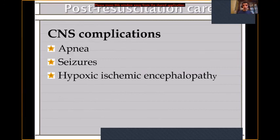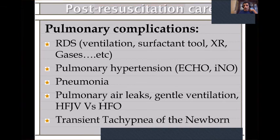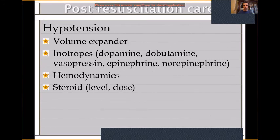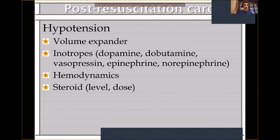You need to address CNS complications — apnea, seizure, hypoxic-ischemic encephalopathy. Pulmonary complications — RDS requiring ventilation, surfactant, x-ray, blood gases; pulmonary hypertension requiring targeted neonatal echo, nitric oxide; pneumonia; pulmonary air leak — PIE or pneumothorax. We start high-frequency ventilation early as a lung protection strategy. TTNB is a gray area. Regarding hypotension, decide on inotropes: dopamine, dobutamine, vasopressin, epinephrine, or norepinephrine. Volume expanders — what type, dose, and timing. We do not use steroids for hypotension unless there is no response and cortisol level is low.